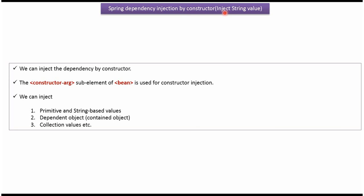In this video tutorial I will cover how to inject a string value using Spring dependency injection by constructor. We can inject the dependency by constructor — a constructor argument is a supplement of a bean, using which we can do constructor injection.